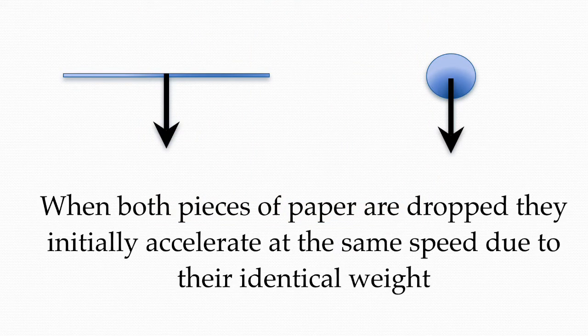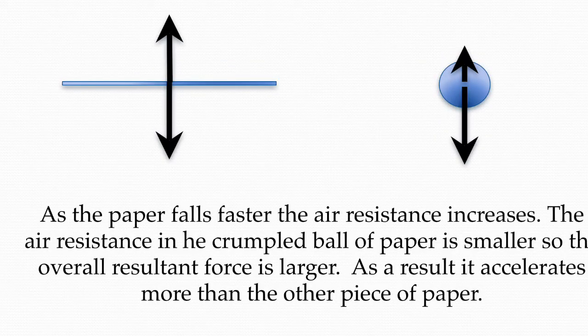When you initially drop the two pieces of paper, both of them have exactly the same weight, and therefore exactly the same force acting on them, and so will fall at the same rate with the same acceleration. However, as they start to speed up, the air resistance on the flat piece of paper is going to be much higher than the air resistance acting on the crumpled up piece of paper.